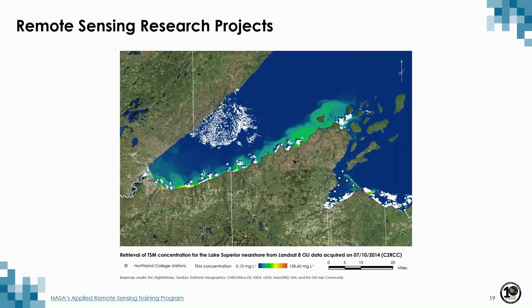The last slide shows one of our additional projects. We are currently looking at the remote sensing of the Lake Superior nearshore. The image shows retrieval of total suspended matter concentration in the Lake Superior nearshore from a Landsat image from July 2014. The image was processed with the C2RCC processor in the SNAP software, and it shows the distribution of TSM pretty accurately, with a very small offset in the magnitude of the data. The objective of this project is to identify the extent of the Lake Superior nearshore region depending on the distribution of TSM and water temperature. Thank you for your attention.